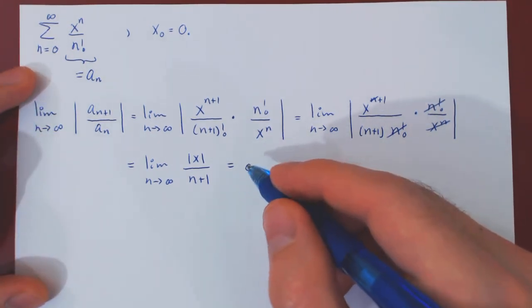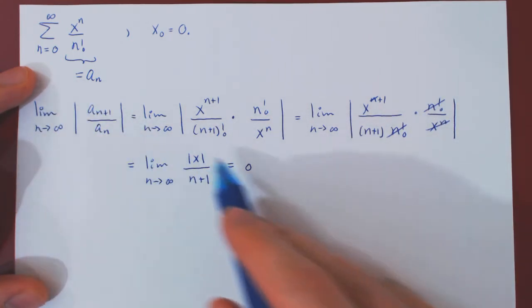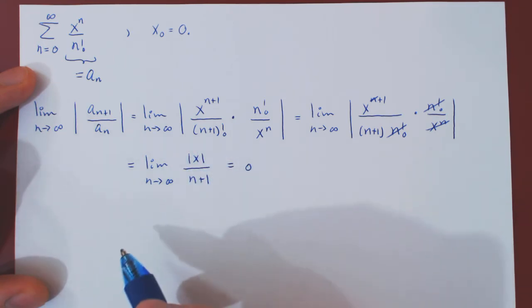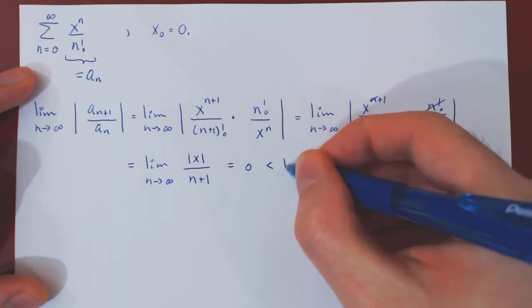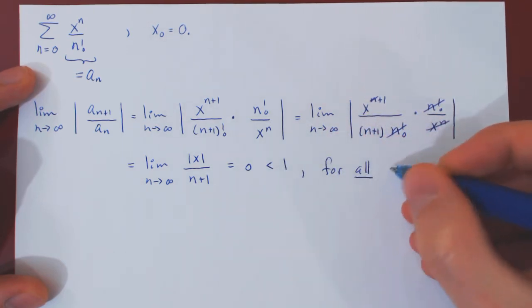But what's interesting here is that the limit of the ratio test is 0, regardless of the value of x. So this is 0, which is obviously strictly less than 1, for all values of x.